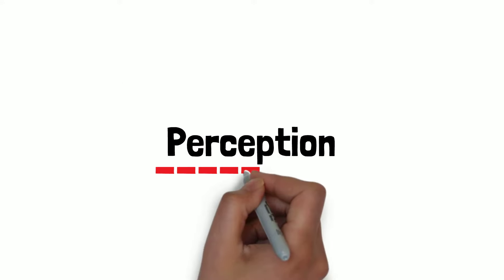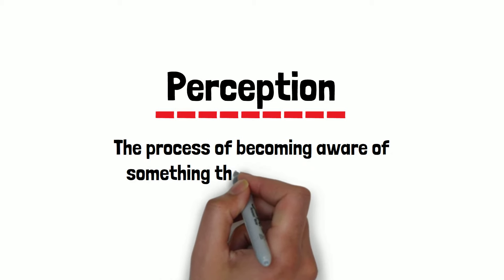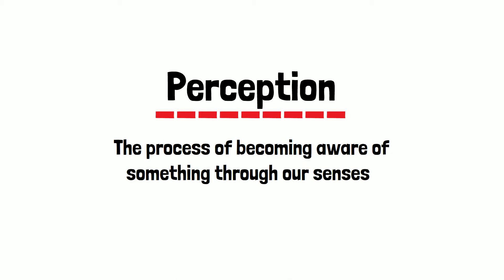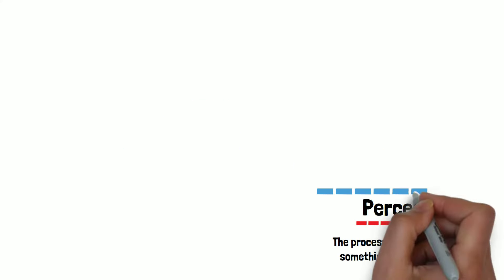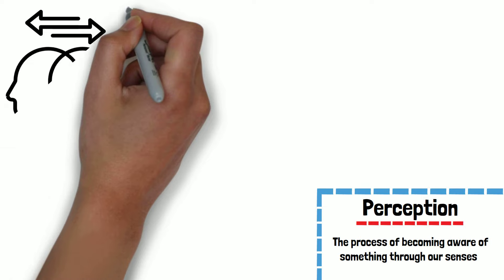Perception is the state of being or process of becoming aware of something through our senses. It is the organization, identification, and interpretation of sensory information used to represent and understand our surrounding environment.